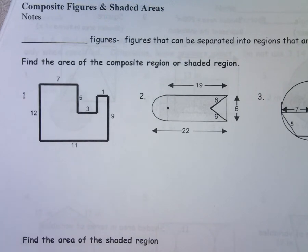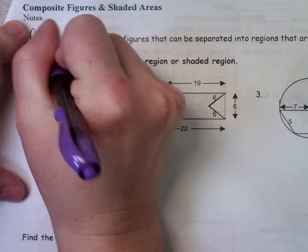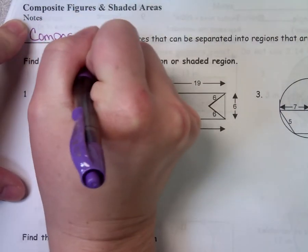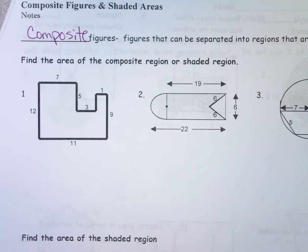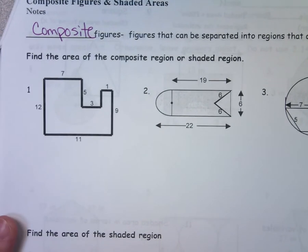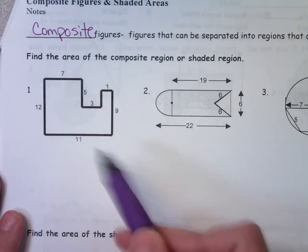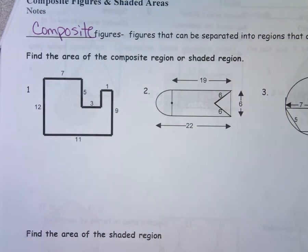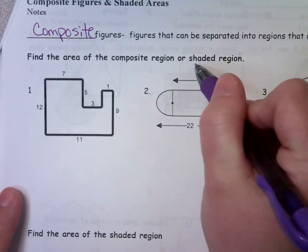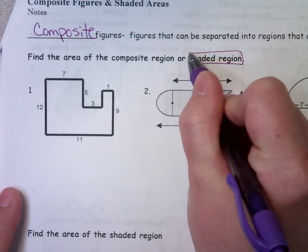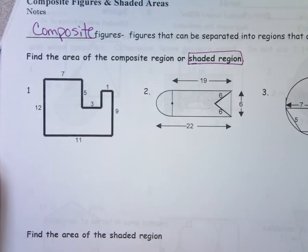Composite figures are made up of more than just one shape. A composite figure is a figure that can be separated into more than just one shape. In these problems, we're going to either find the area of the composite region by figuring out what the different shapes are, finding all their separate areas and adding them up, or we may have a shaded region — and sometimes when we have a shaded region, we do subtracting.